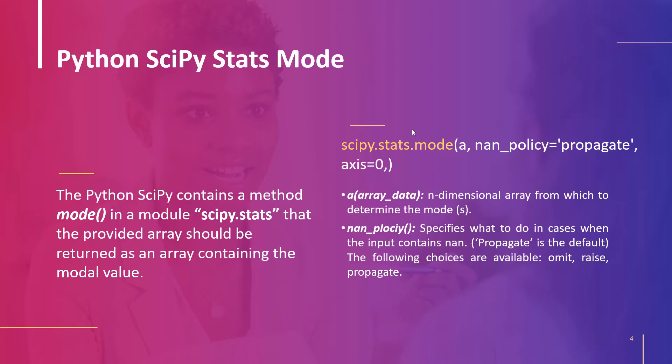The nan_policy options available are: 'propagate' which returns NaN, 'raise' which generates an error, and 'omit' which performs the calculation by ignoring the NaN values. The axis parameter is used to specify along which axis to compute the mode. By default it is None; if None is specified then it computes over the whole array.